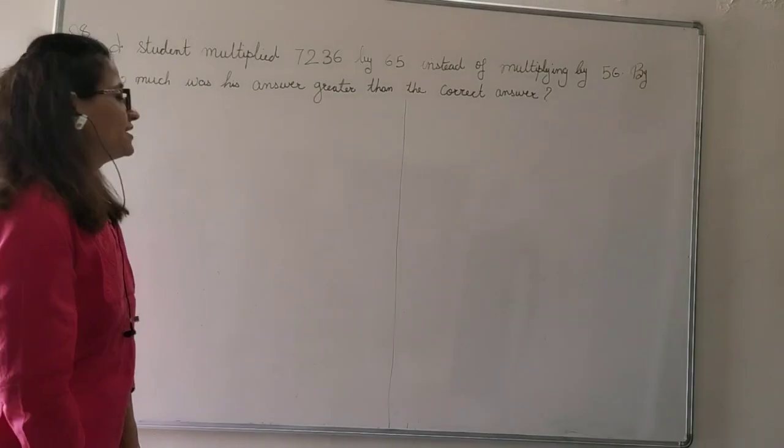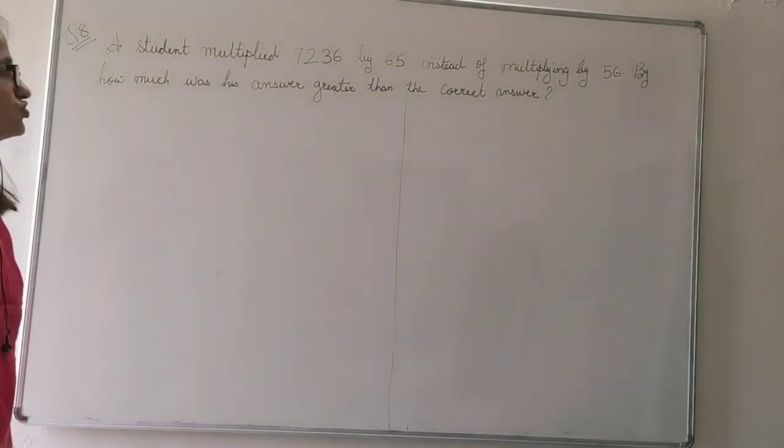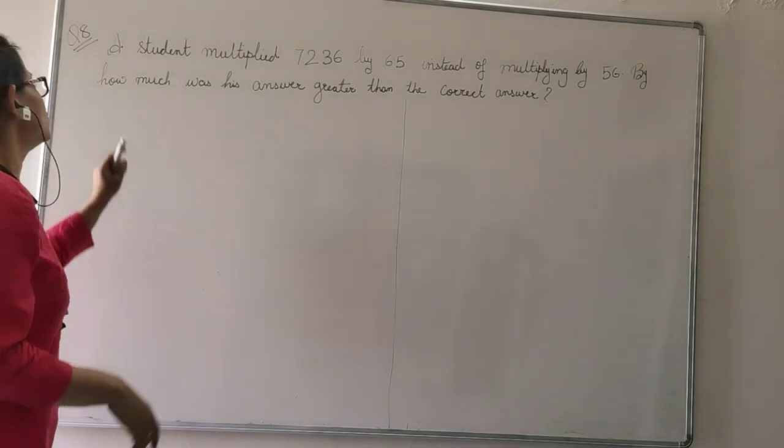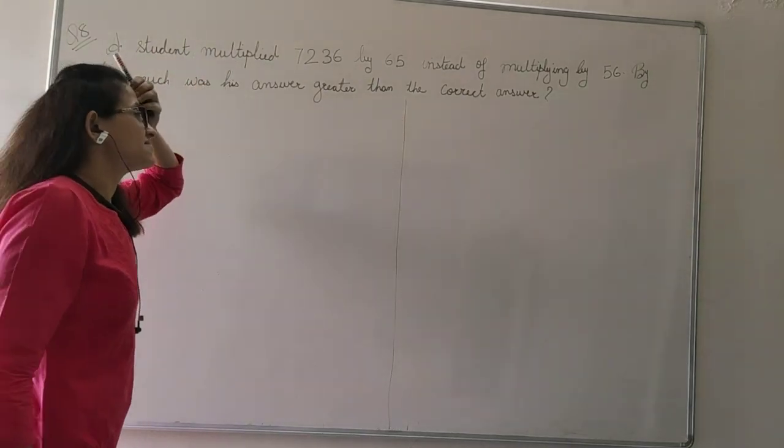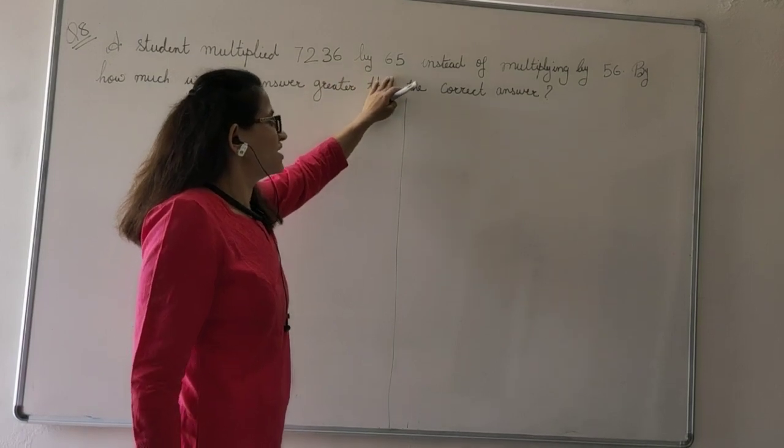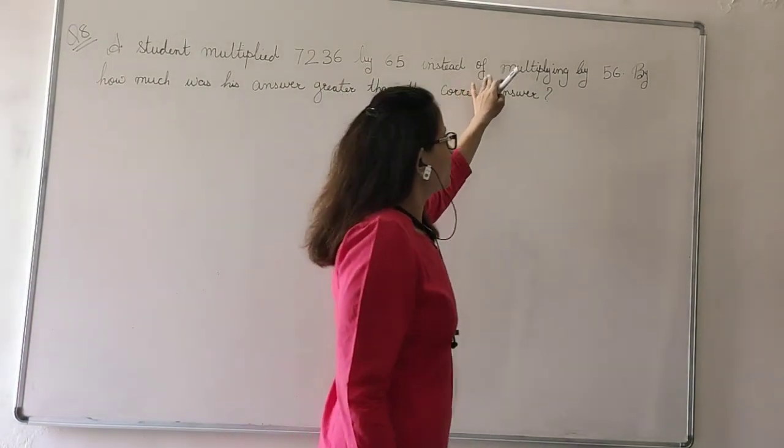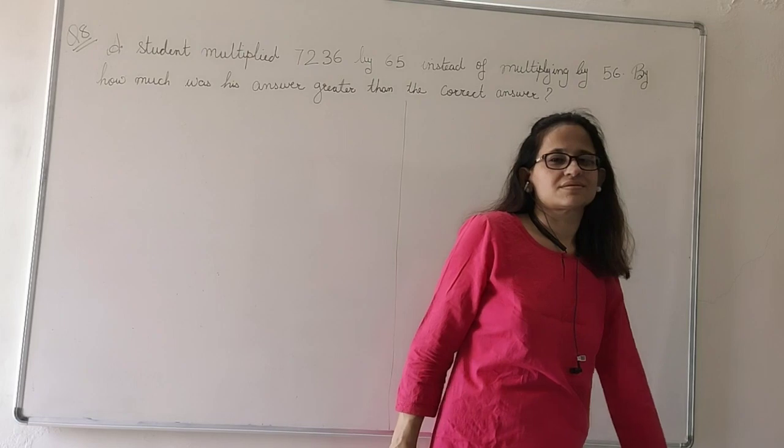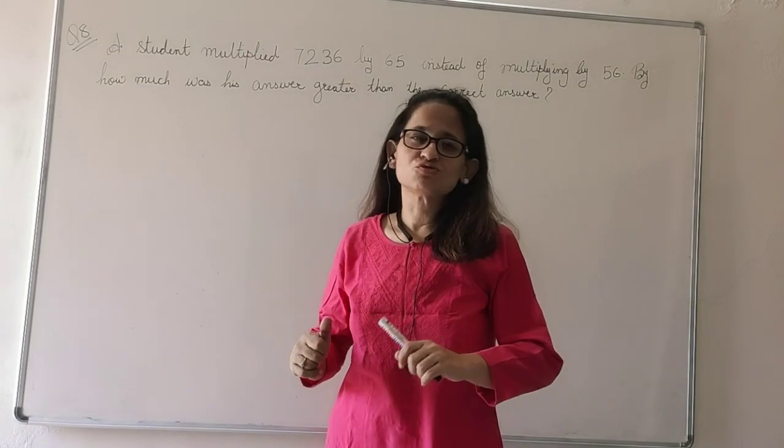Question number 8 of exercise 1.2. A student multiplied 7236 by 65 instead of multiplying by 56. This mistake many of us do during exams.